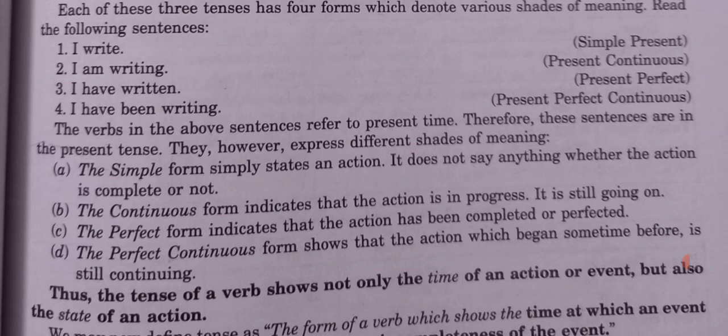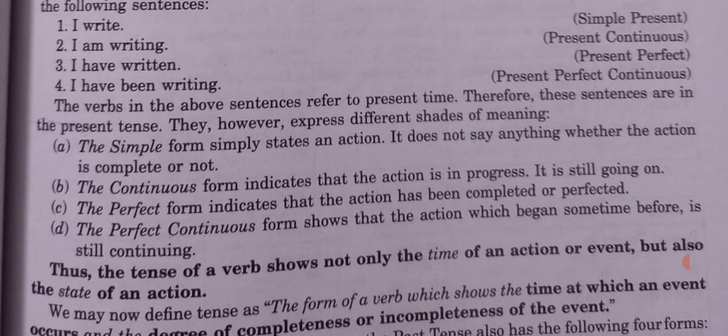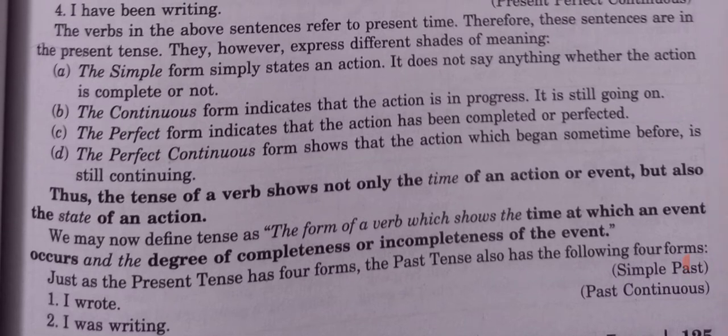The verb in these sentences refers to present time, so they are all in the present tense, but they express different shades of meaning. The simple form simply states an action — it doesn't say whether the action is completed or not. A simple state or action is described through the simple form.